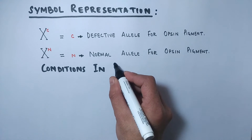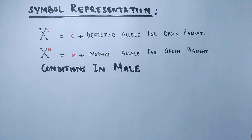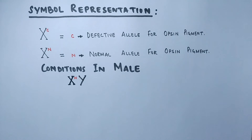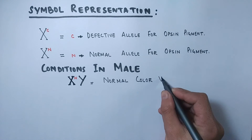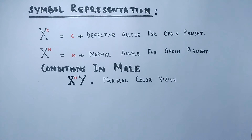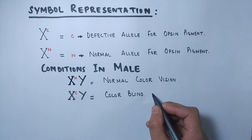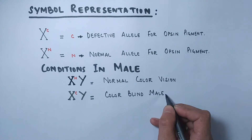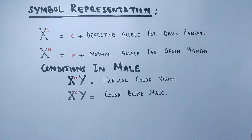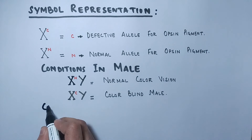Now let's look at conditions in males first. Males are heterogametic — they have only one X chromosome and one Y chromosome, producing two types of gametes: X and Y. The condition X-N Y gives normal color vision, while the condition X-C Y gives a colorblind male, since only one defective allele on the single X chromosome is sufficient to cause colorblindness in males.